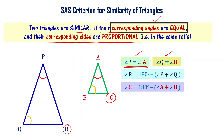Angle R equals 180 minus (angle P + angle Q), and angle C equals 180 minus (angle A + angle B). Since angle A equals angle P and angle Q equals angle B, substituting these, we can say that angle R equals angle C. So corresponding angles of the two triangles are equal.